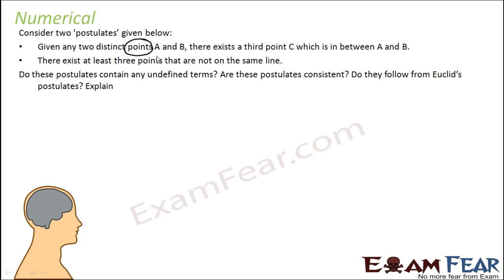In the first postulate, point is not defined. In the second postulate — there exist at least three points not on the same line — 'point' is not defined and 'line' is also not defined. So these are undefined terms.